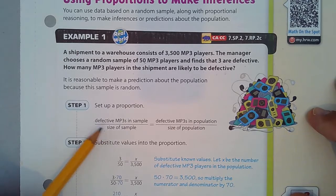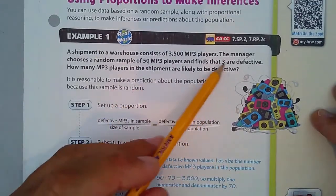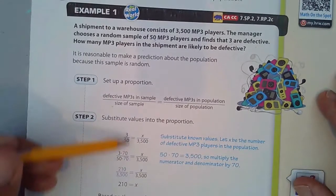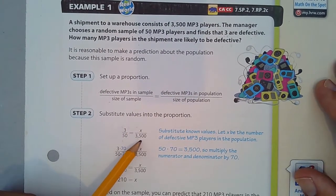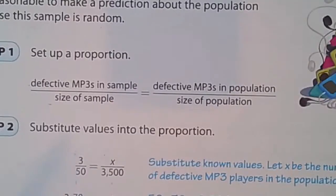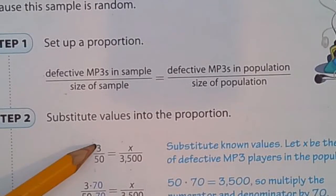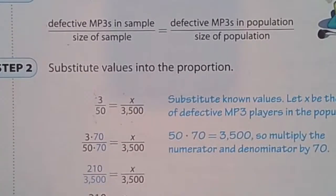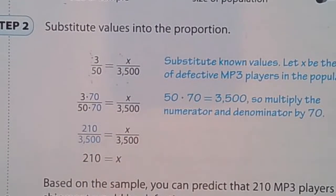How many MP3 players in the shipment are likely to be defective? We can set up, it's reasonable to make a prediction of the population because the sample is random. That's an important component. It has to be random for this to work. Let's make a proportion which is two equal fractions, and here we'll have the defective ones out of the entire sample size. 3 out of 50 equates to how many in the entire population? 3 were defective out of the 50 in the sample. So, how many in the entire population?